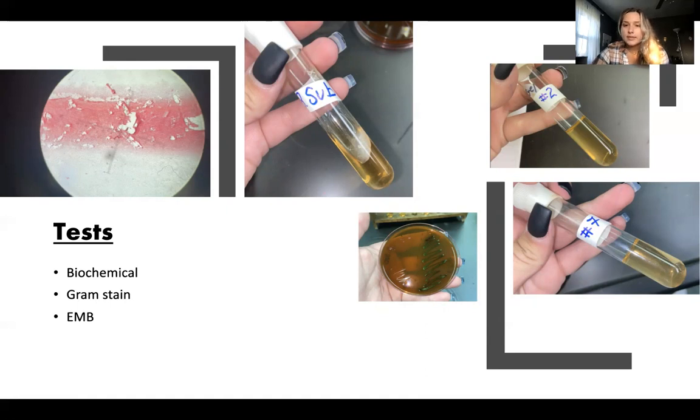Gram-positive bacteria, lactose-positive forming on an EMB plate, and the gelatinase test are shown here. These are examples of how I tested my positive antibiotic producers.